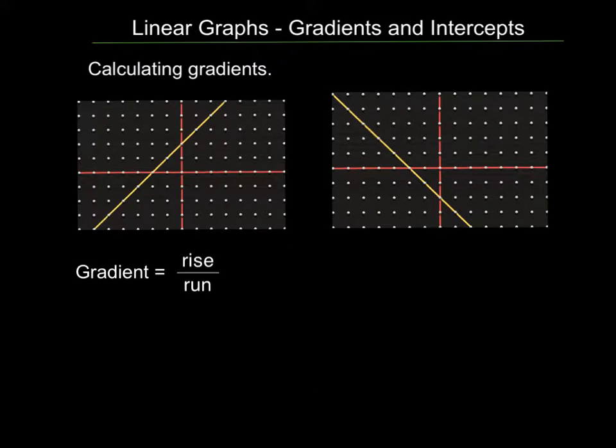Now rather than just saying a gradient goes up or goes down or it's steep or not steep, we need to calculate a value so we can compare them properly. And to do that we calculate the rise over the run. The gradient is equal to the rise over the run.